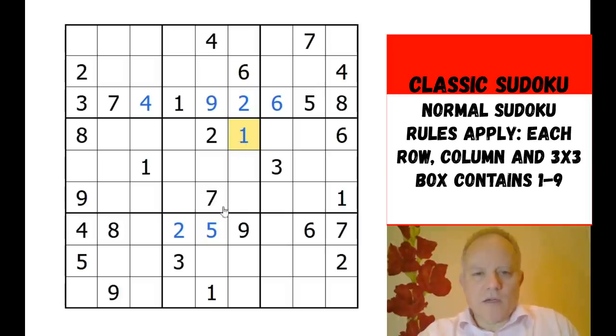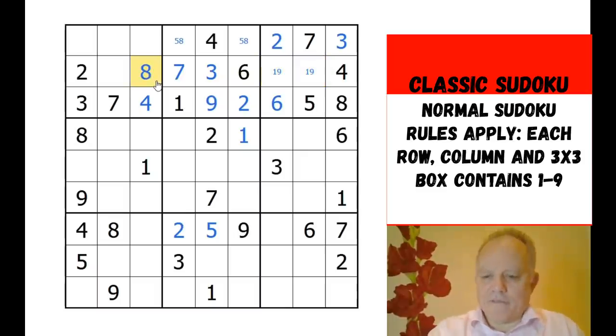1's in rows 5 and 6 give me that 1. 3 in the central column now has to be up here, that gives us a 7. We've got an 8-5 pair at the top. 2 and 3 are going to have to go in box 3 in row 1, leaving a 1-9 pair for the rest of the box. That gives an 8-5 pair in row 2 which we can fill in.